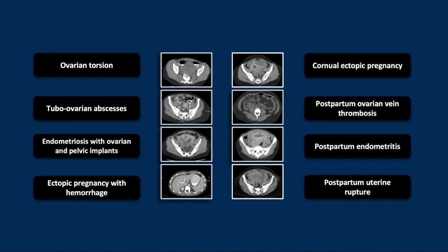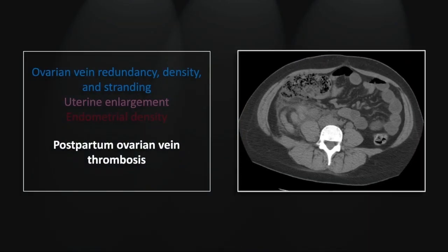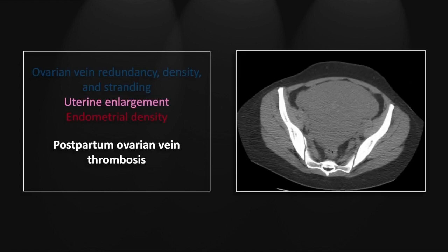Our next case is a postpartum ovarian vein thrombosis. This one, interestingly, is on a non-contrast scan, but it is so pronounced it is still quite visible. There is obvious right abdominal stranding, but there is a large, redundant, tubular structure that is hyperdense as well, and that represents the markedly tortuous dilated ovarian vein.